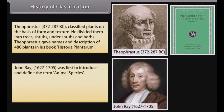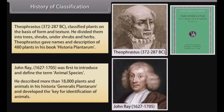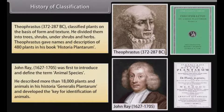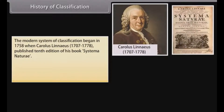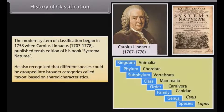John Ray (1627–1705) was the first to introduce and define the term 'animal species.' He described more than 18,000 plants and animals in his Historia Generalis Plantarum and developed a key for the identification of animals. The modern system of classification began in 1758 when Carolus Linnaeus (1707–1778) published the 10th edition of his book Systema Naturae. He also recognized that different species could be grouped into broader categories called taxon, based on shared characteristics.